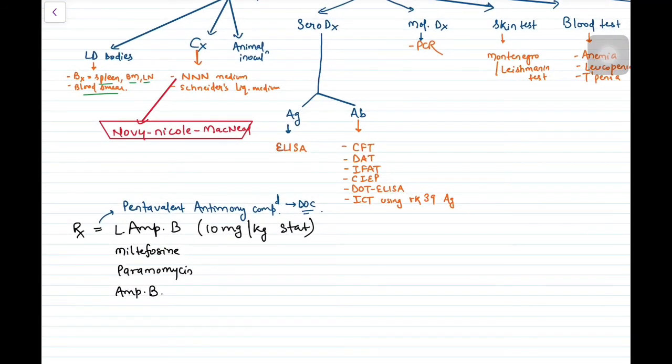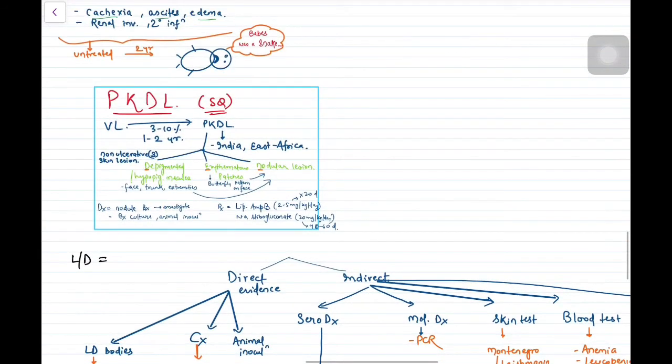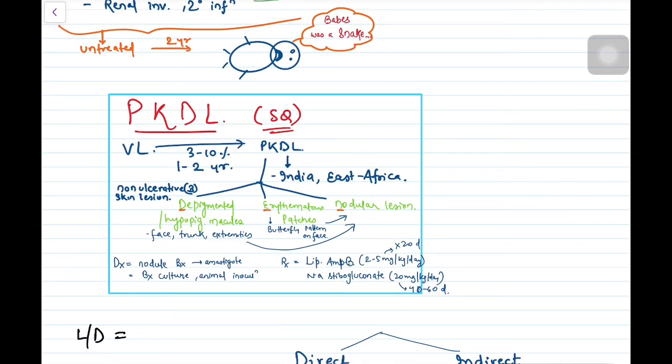In treatment, you can use pentavalent antimony compound or liposomal amphotericin B, miltefosine, paromomycin, or amphotericin B. Now let us discuss this entity which is post-kala-azar dermal leishmaniasis. This visceral leishmaniasis, after treatment, you have treated the patient. But in 3 to 10% of patients, in 1 to 2 years, they will develop an entity PKDL. There are non-ulcerative skin lesion changes. Initially there are depigmented or hypopigmented macules mostly on the face, trunk, and extremities. Then there are erythematous plaques in butterfly pattern on face, and then nodular lesions. It is D-E-N: depigmented, erythematous, nodules. Diagnosis is by biopsy from nodules. You will find amastigote form. Then you can do culture or animal inoculation. Treatment is also liposomal amphotericin B and sodium stibogluconate.